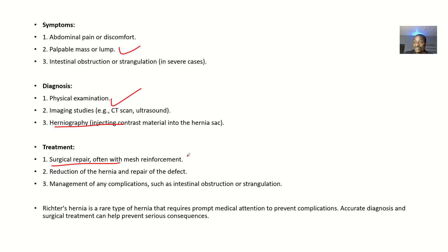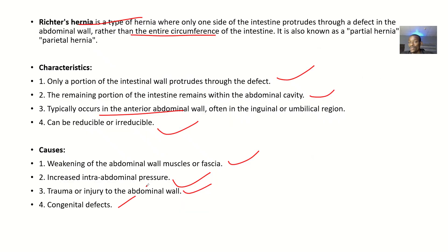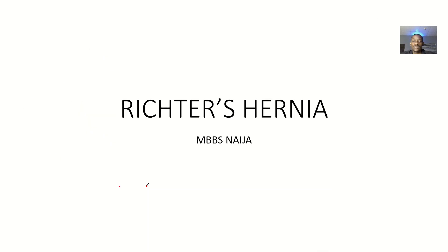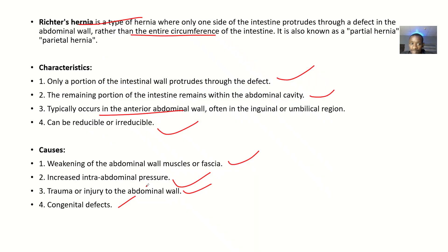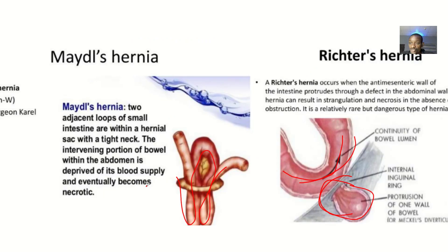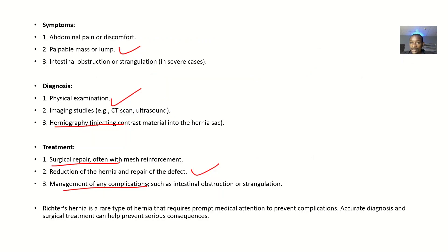Treatment involves surgical repair, often with a mesh to reinforce and strengthen the area. The hernia can also be reduced and the defect repaired. Any complications such as intestinal obstruction or strangulation can also be managed. That covers Richter's hernia — definition, characteristics, causes, symptoms, diagnosis, and treatment.